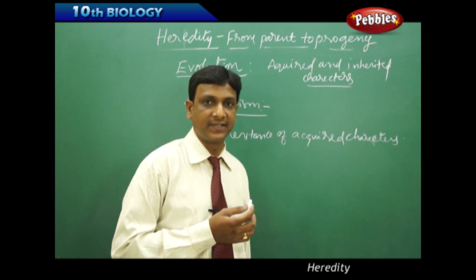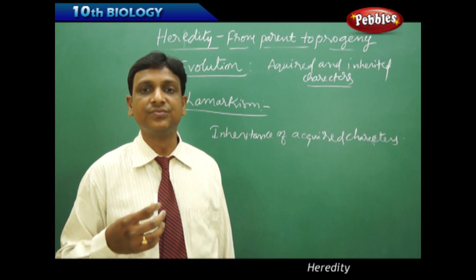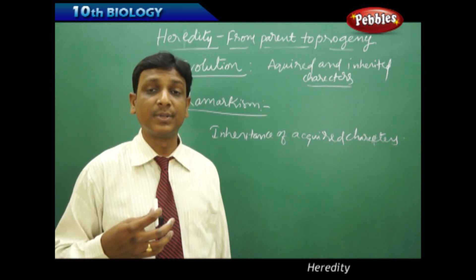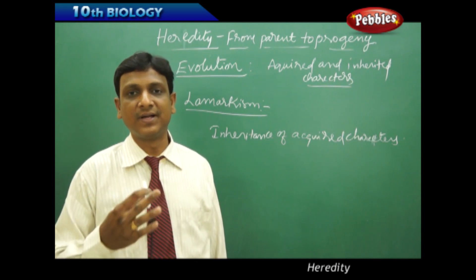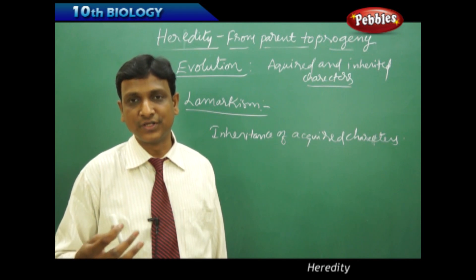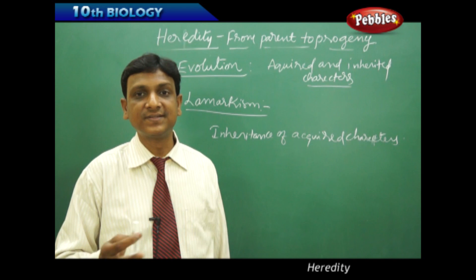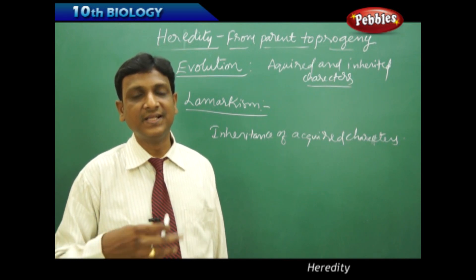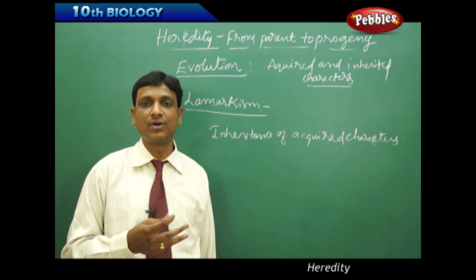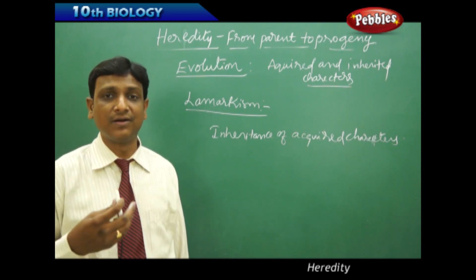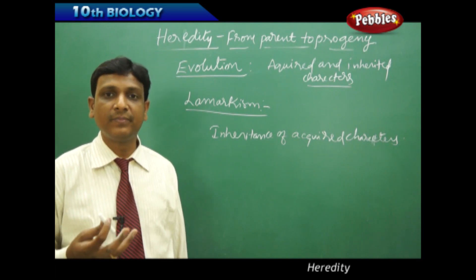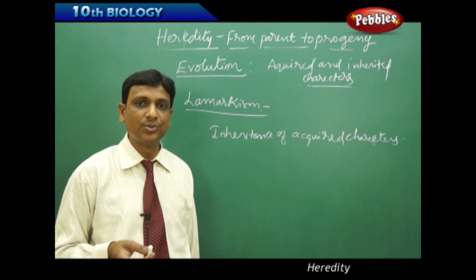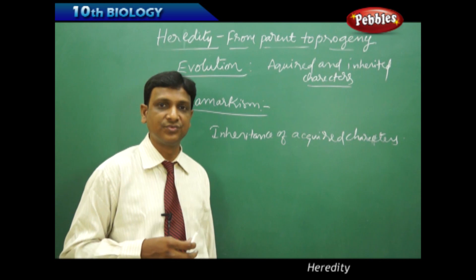Later, another scientist called August Weismann, to check whether what Lamarck proposed was correct, conducted experiments on rats. He cut the tails of rats for a number of generations. But he did not find that the offspring were born without a tail — he always found that the new rats were born with a tail. He concluded and proved that bodily changes will not reflect in next generations, so these physical changes are not inherited. That means if a person loses a hand or leg, his children will definitely be born with hands and legs, because this is physical damage and is not reflected in the genes or DNA. This is what Lamarck proposed, and it was disproved by August Weismann.